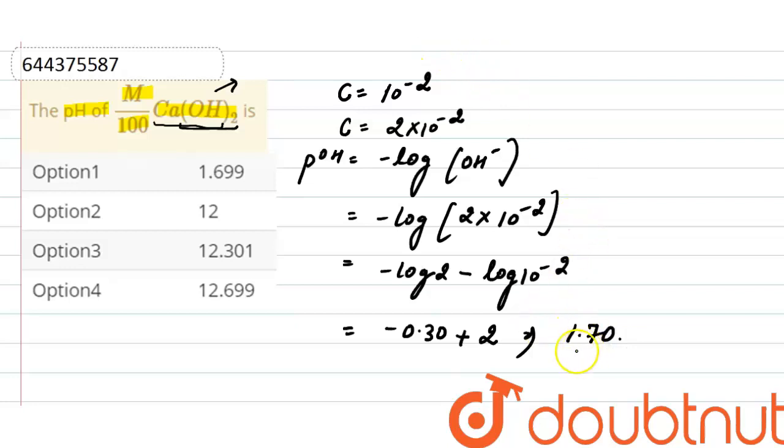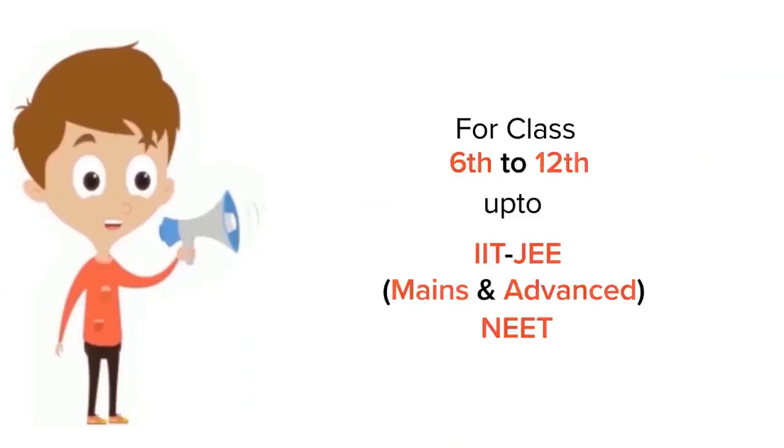Now the pOH of the solution is 1.70, and as we know pH plus pOH is 14, so pH here will be 14 minus 1.70, and that will be 12.30. So correct option here is option 3.